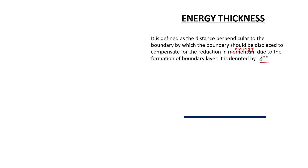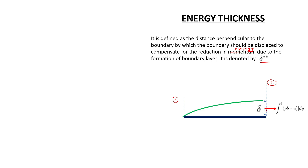Now let us consider a flat plate with a boundary layer growth. At the trailing edge, the boundary layer thickness is delta. We have sections 1 and 2. Section 2 mass flow rate is the integral from 0 to delta of rho times b times u dy.